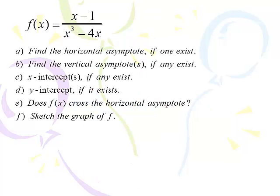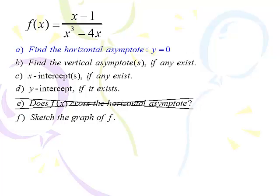Next: f of x equals x minus 1 over x cubed minus 4x. X cubed on the bottom, x on top — the horizontal asymptote is y equals 0, because x cubed is much bigger than x. So I'm crossing out part E — we will not ask that question. Part E gets answered in part C, the x-intercepts, because the x-axis is now our horizontal asymptote. We only ask E when the horizontal asymptote is not zero.